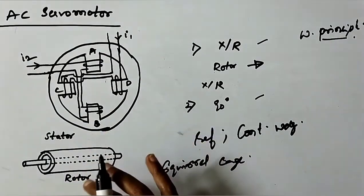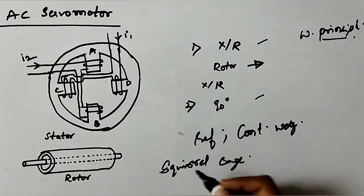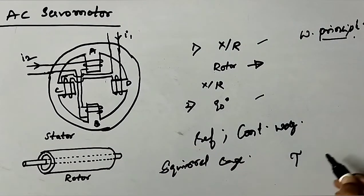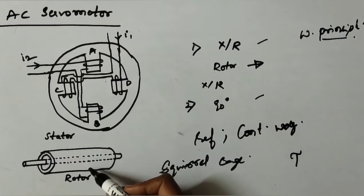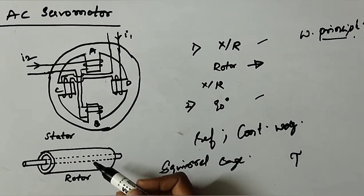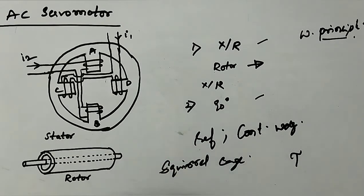This voltage circulates current in the short-circuited rotor conductors and the currents create rotor flux. Due to the interaction of this stator flux and rotor flux, a mechanical force or torque is being developed on the rotor so that the rotor starts moving in the same direction as the rotating magnetic field.